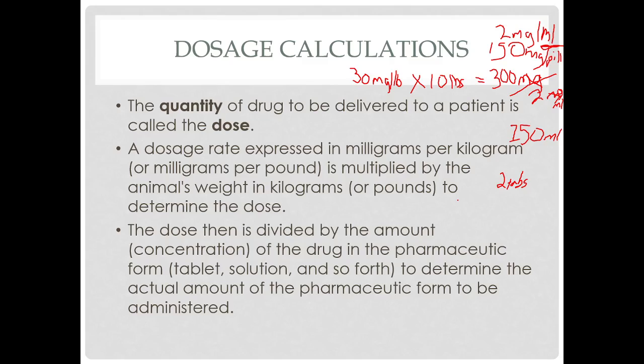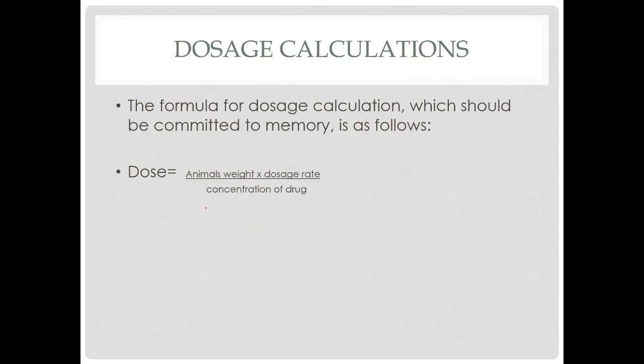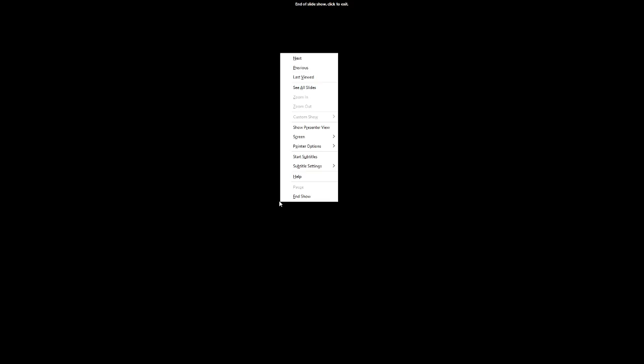So it is dose, dosage rate times weight divided by concentration. So animal's weight, dosage rate, concentration of the drug. So really a simple way to calculate those dosages.